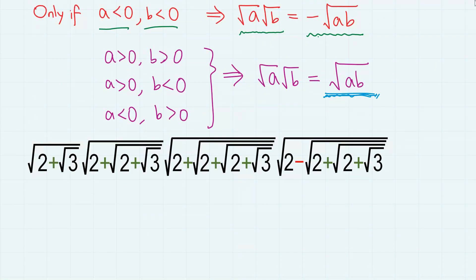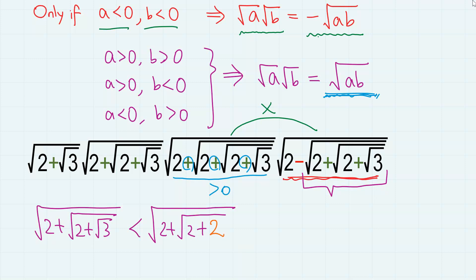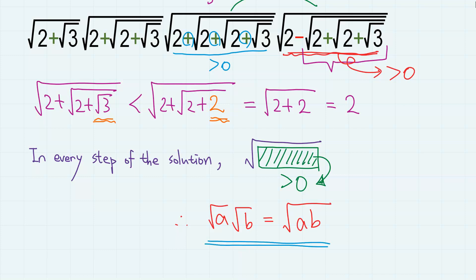And back to our problem, you will notice that whenever we multiply two radicals in the process, one of the two inner parts always consists of only plus signs, making it definitely positive. In fact, even for this suspicious part right here — √(2 + √(2 + √3)) — this is less than √(2 + √(2 + 2)), which is √(2 + 2), which is 2. So even this inner part is positive. And similarly, you can easily show that every inner part of the radicals shown in the process is positive. So we can definitely use this property with no problem.